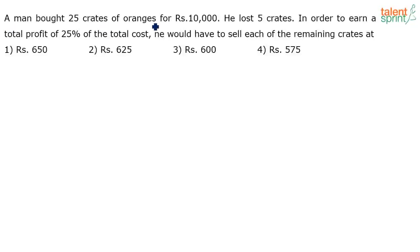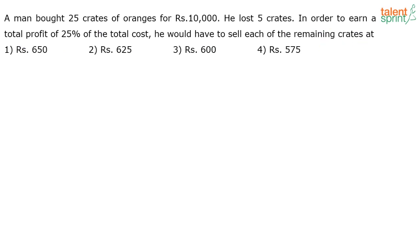A man bought 25 crates of oranges for rupees 10,000. He lost five crates. In order to earn a total profit of 25% of the total cost, he would have to sell each of the remaining crates at how much?